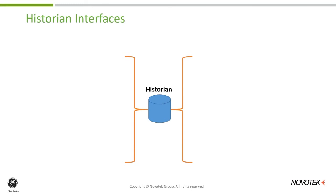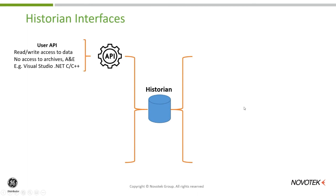We have the historian archiver, and historically we support a number of interfaces. Starting off, we have the User API, which allows us to read and write data to the historian at extremely high speed. Most of the samples are in Visual Studio C and C++.